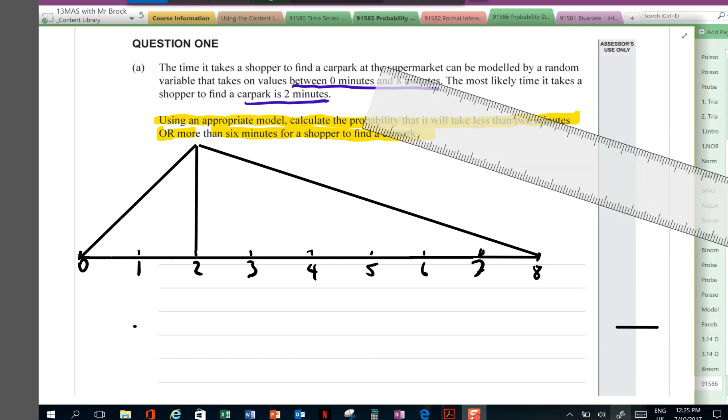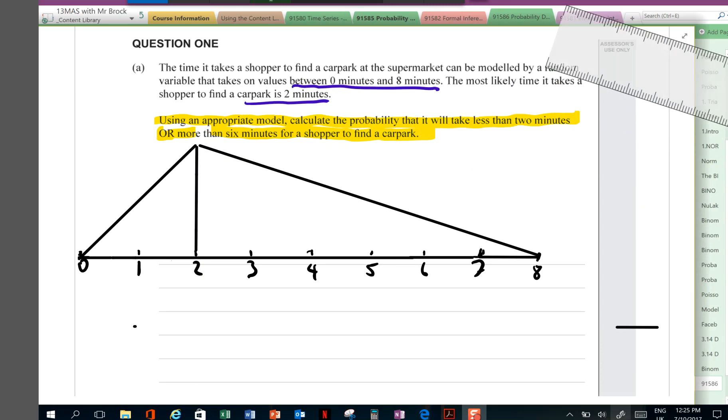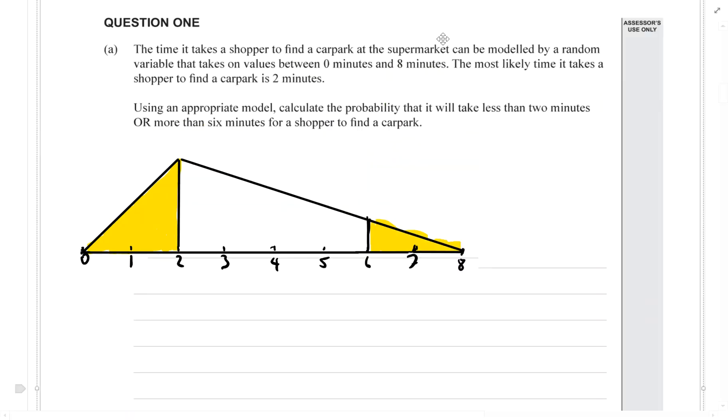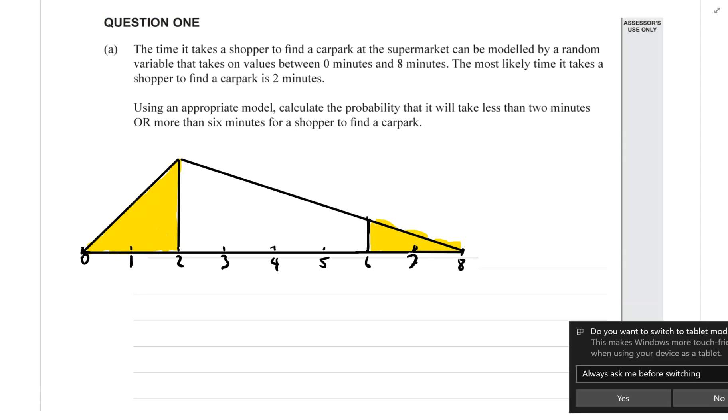And the two regions I'm being asked about in the question, the probability it takes less than two minutes, so that's the zone in here. And more than six minutes, so that's going to be this zone in here. The other thing I forgot to do is I need to label my graph. So I need to label the x-axis. So that is time in minutes.